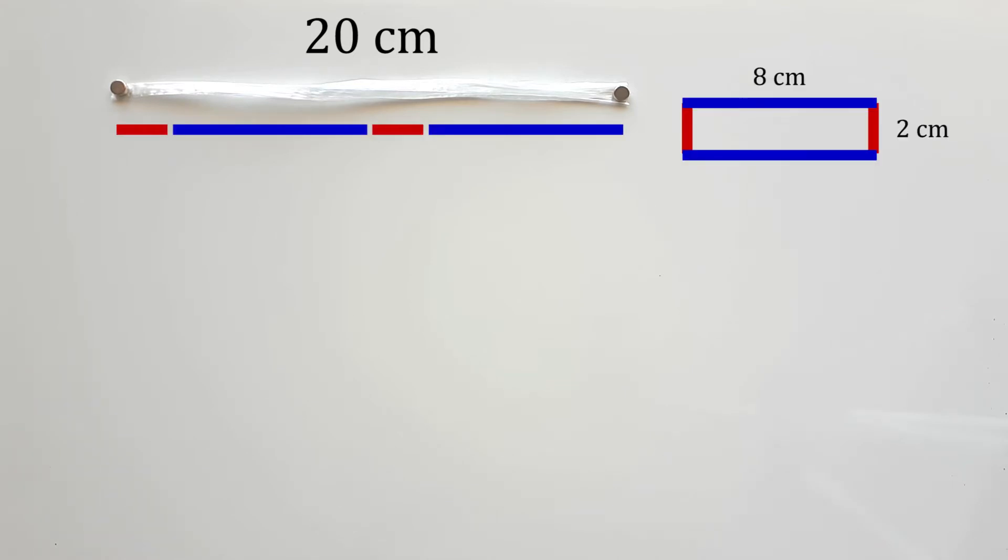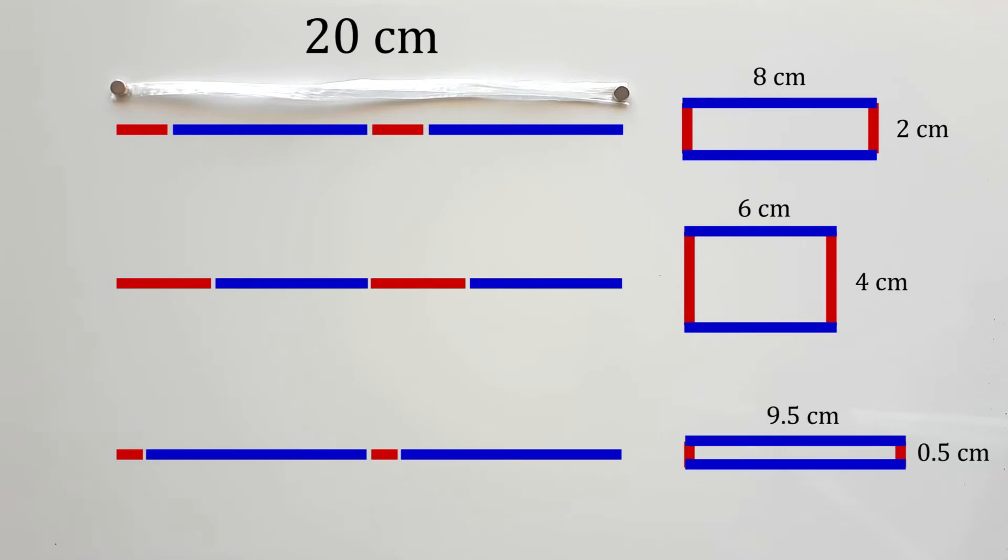This piece of Raphae's string is 20cm long. Depending on how I cut it, I could make a rectangle that is 2x8cm wide, 6x4cm, or even half a centimeter by 9.5cm, which is a really thin rectangle.